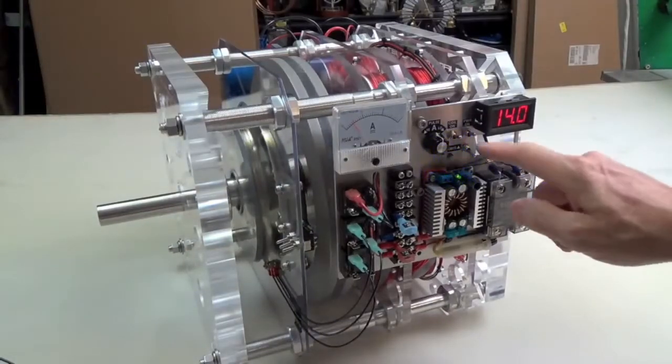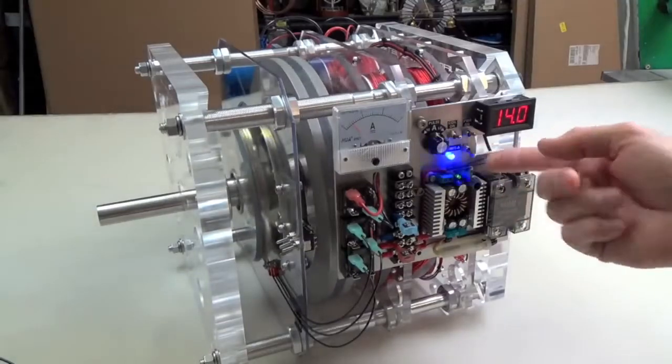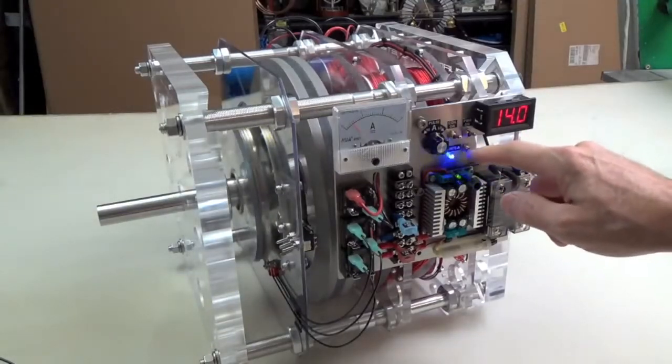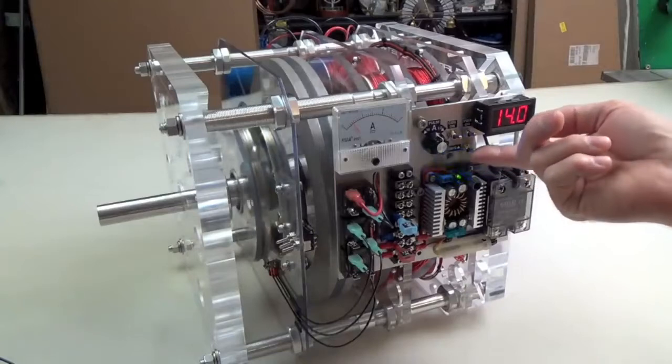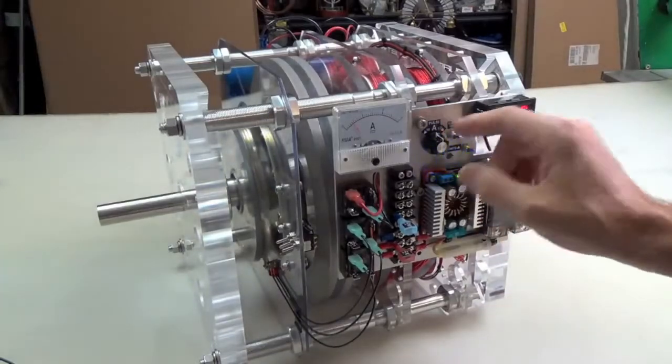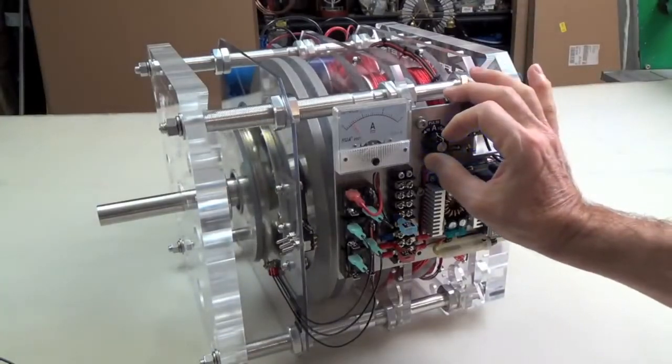This switch over here is on the fixed resistors. When I flip the switch up, now it's on the potentiometer and I can adjust it.